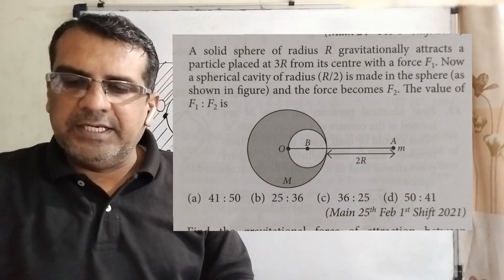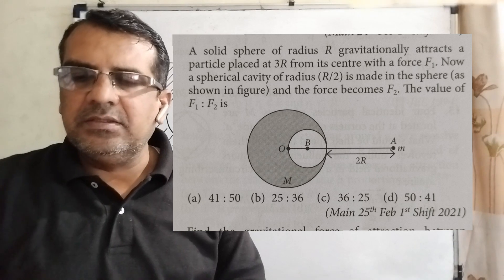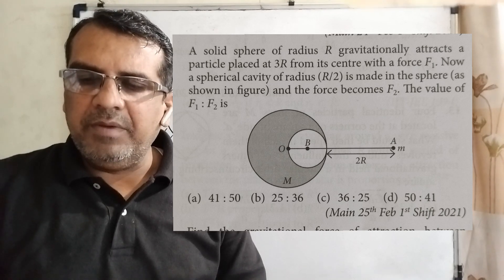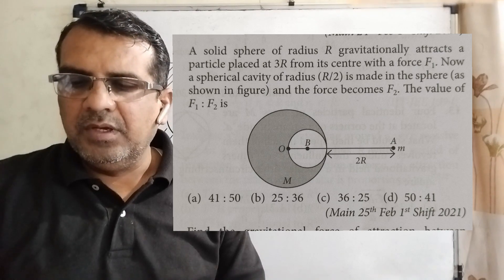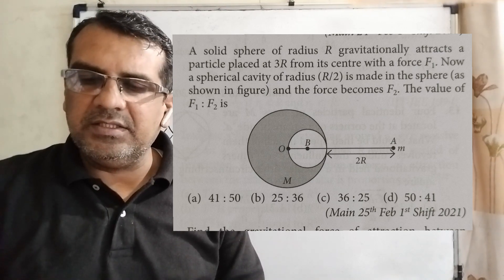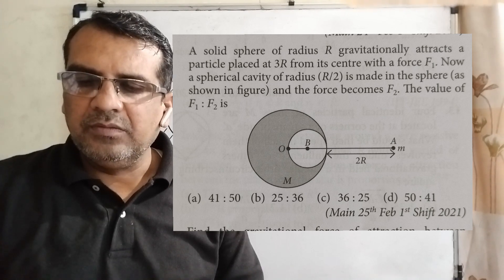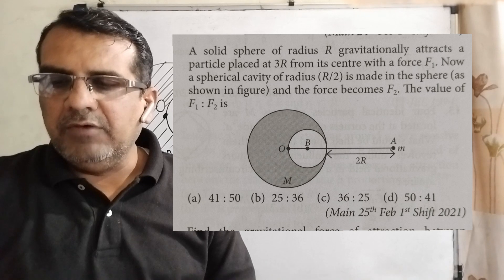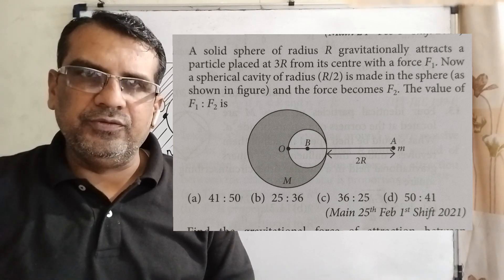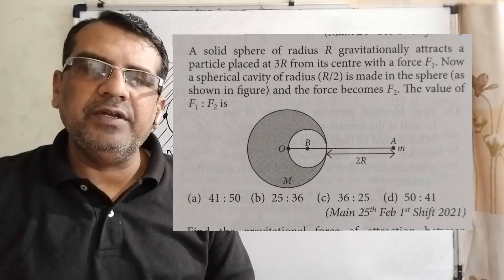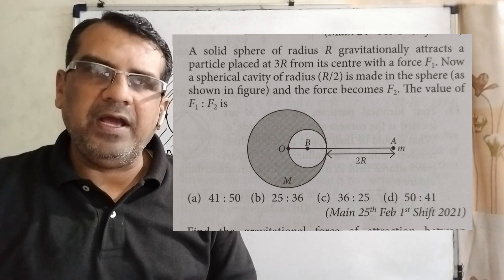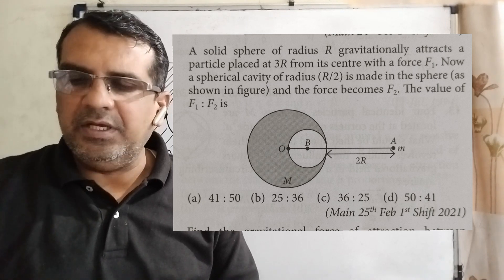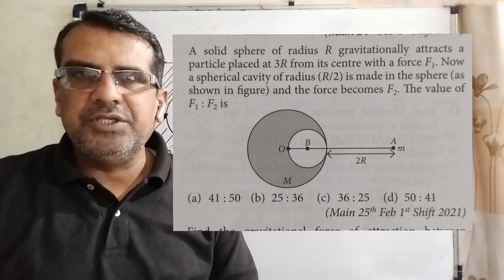Let us see what the question says. A solid sphere of radius R gravitationally attracts a particle placed at 3R from its center with a force F1. Now, a spherical cavity of radius R by 2 is made in the sphere according to the figure and the force becomes F2. The value of F1 to F2 is, you have given 4 options. 41 is to 50, option B 25 is to 36, option C 36 is to 25, and last option D 50 is to 41. And this question is asked in JEE Mains 2021.